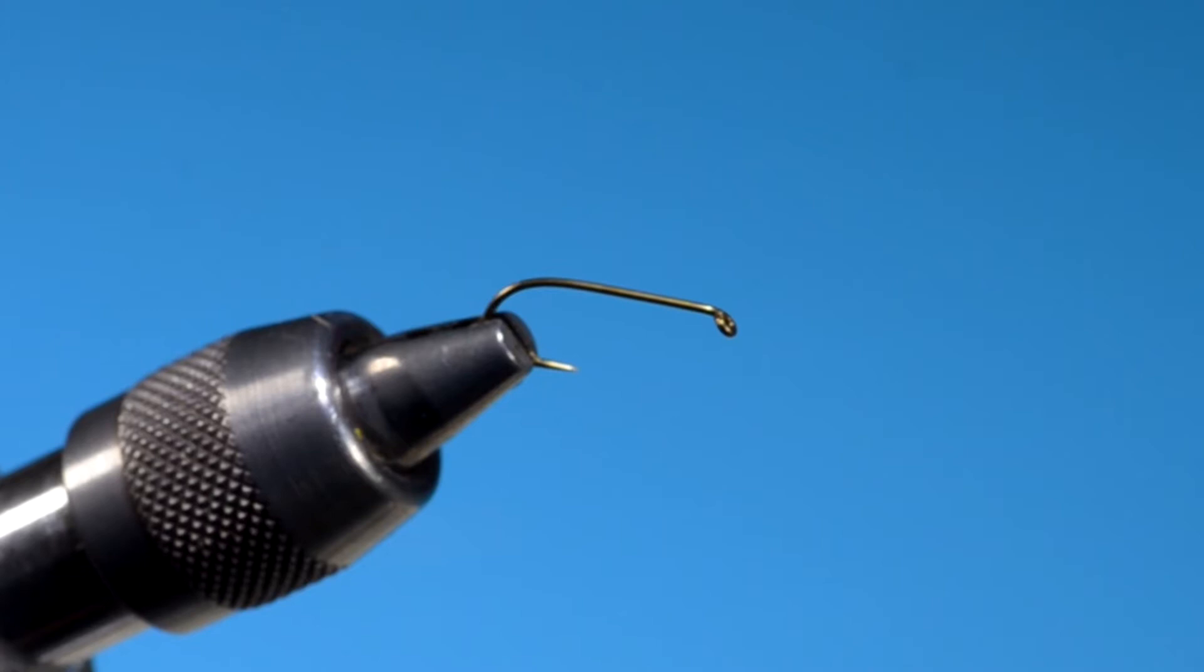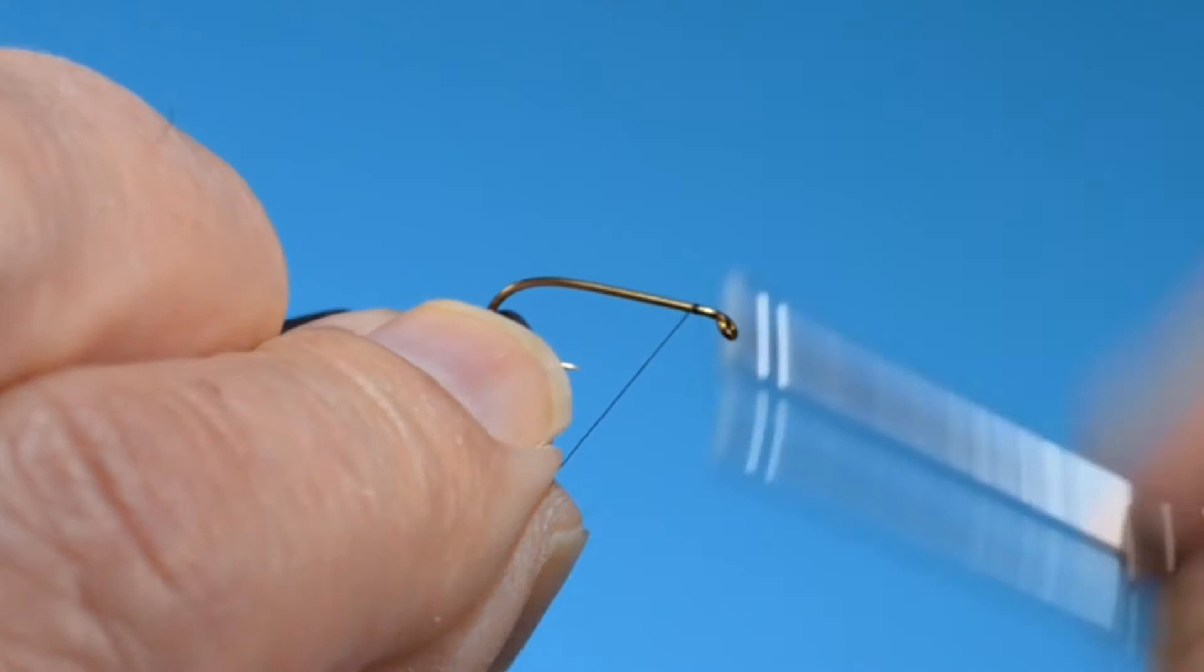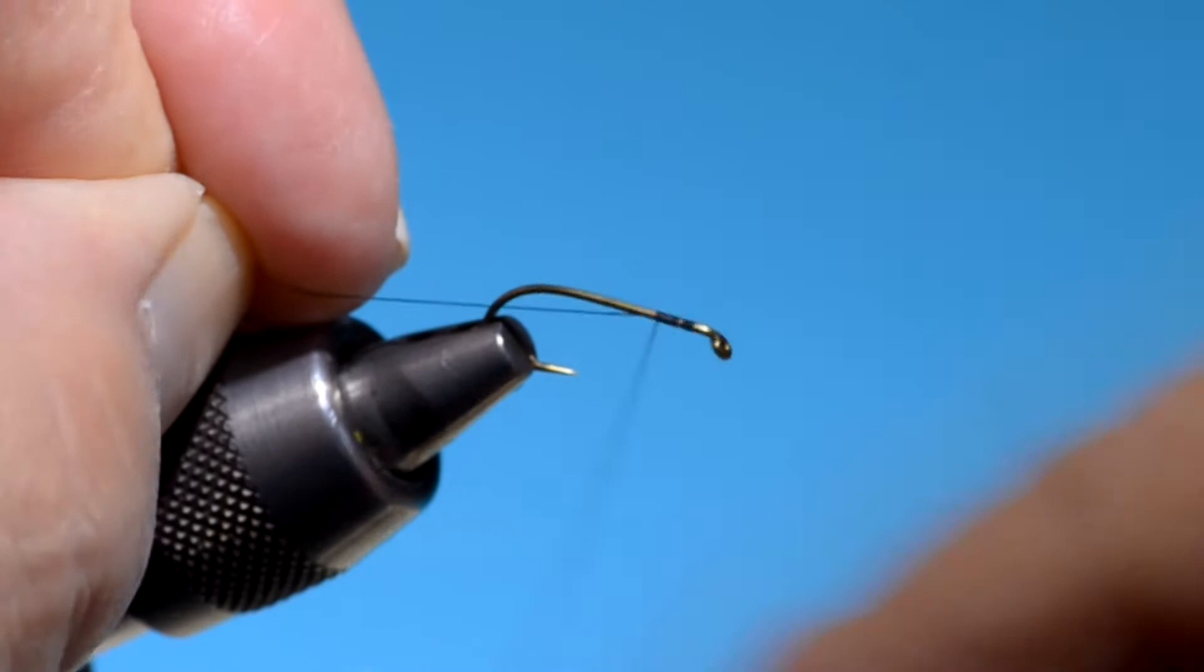This version's a winged wet tied on a number 10 Daiichi wetfly hook. This is from Helen Shaw's Flies for Fish and Fishermen. But you don't have to do this winged version.